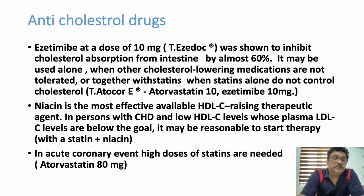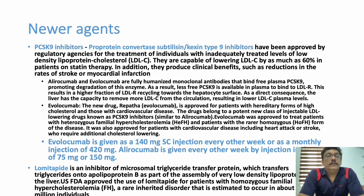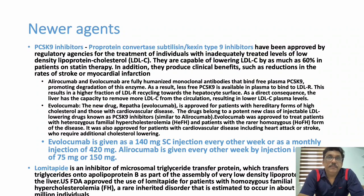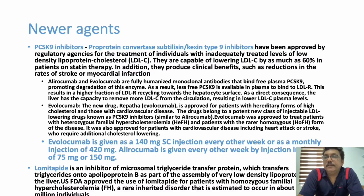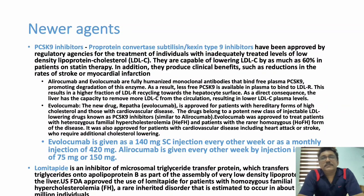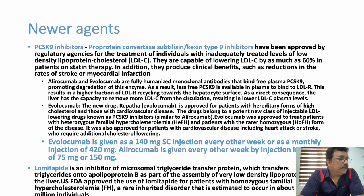In acute coronary syndrome, higher doses of statins are given — atorvastatin 80 mg or rosuvastatin 40 mg. The newer drug evolocumab can be given as a 140 mg subcutaneous injection every other week, or a monthly injection of 420 mg. This can control cholesterol in patients with very high levels or even statin resistance. These are monoclonal antibodies — very useful but extremely costly, so they should be used with caution when cost is a limiting factor.